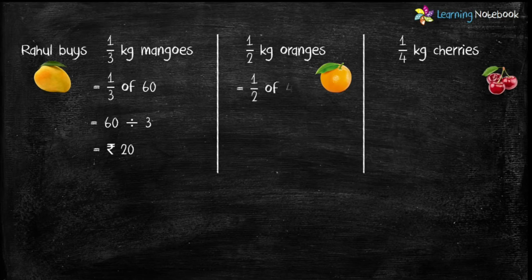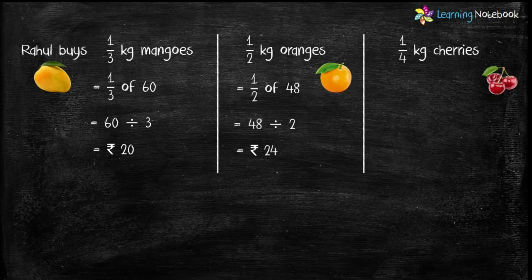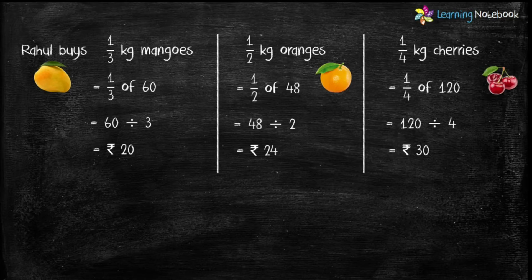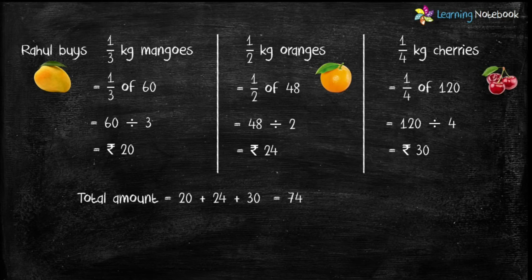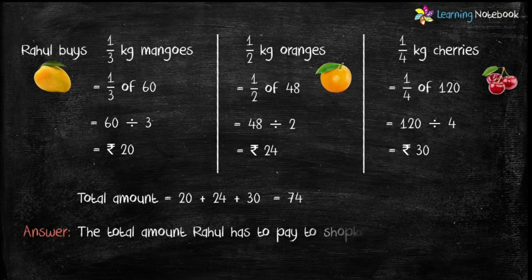Similarly, calculate the cost of one-fourth kg of cherry, which is equal to 1 by 4 of 120. Divide 120 by 4, which is equal to Rs 30. Therefore, total amount Rahul has to pay equals the sum of 20, 24 and 30, which is equal to Rs 74. The total amount Rahul has to pay to the shopkeeper is Rs 74.